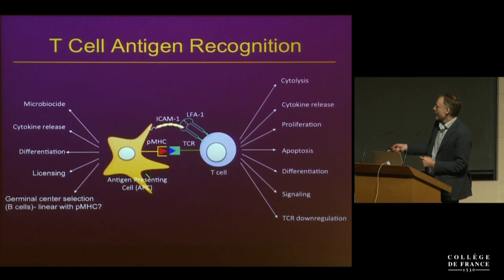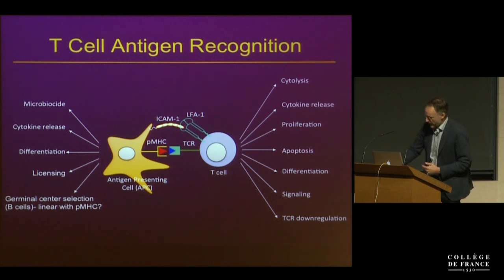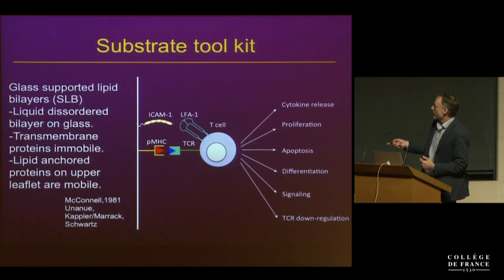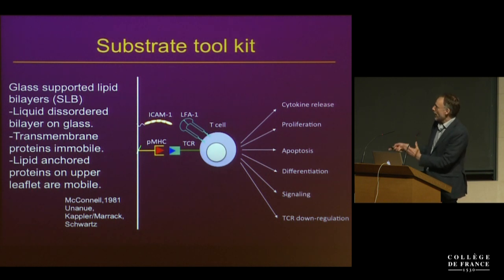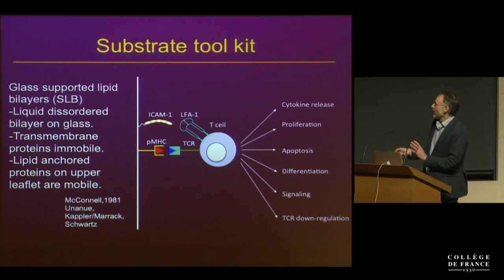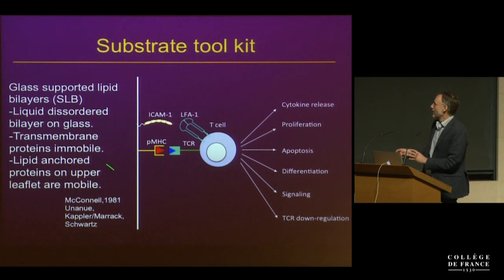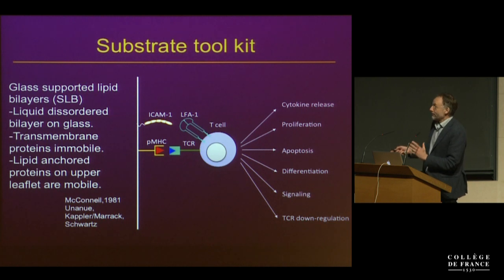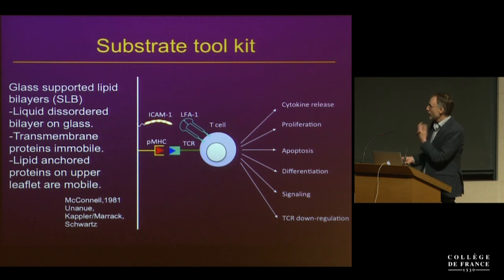In order to study the signaling mechanisms and communication in this interface, even back in the 1980s as students and into the 90s when we set up more complete reconstitution systems, we have relied on converting the antigen-presenting cell into a planar substrate. This has a lot of advantages from an imaging standpoint, though it also has a number of caveats. We've been able to learn quite a bit from this model system, although we always refer back to live antigen-presenting cells or in vivo environments to test things we've learned from these reductionist models.